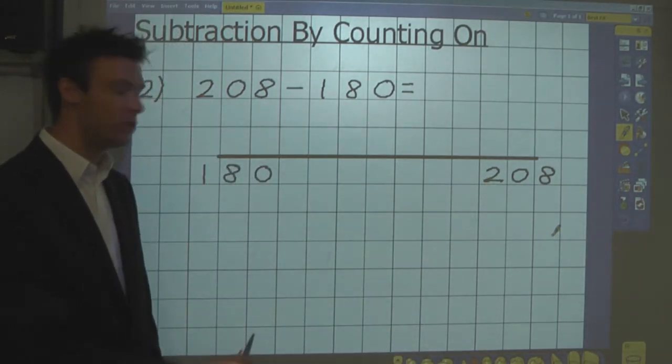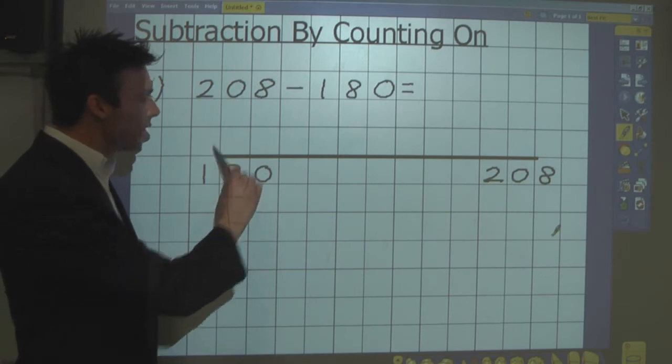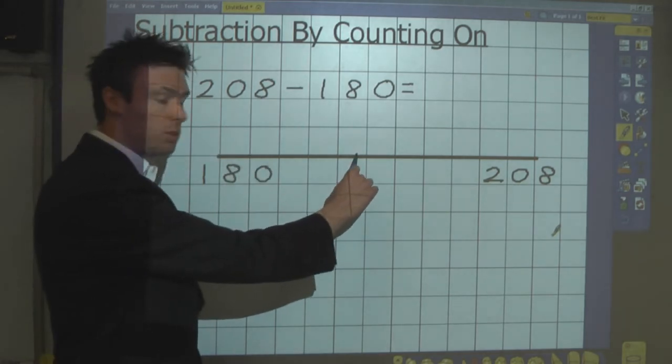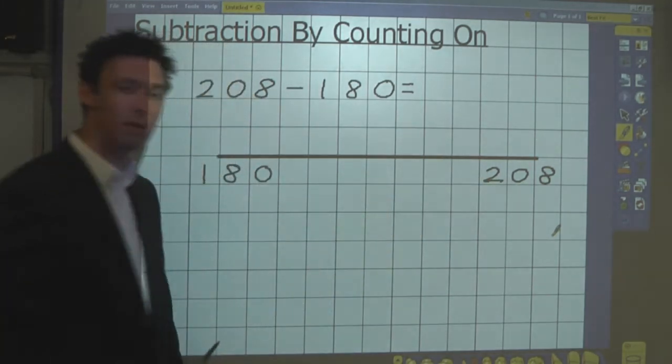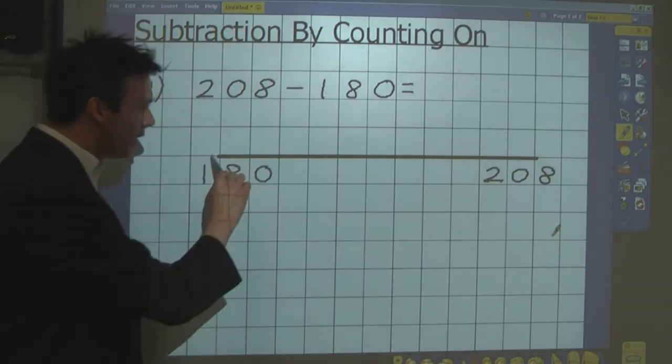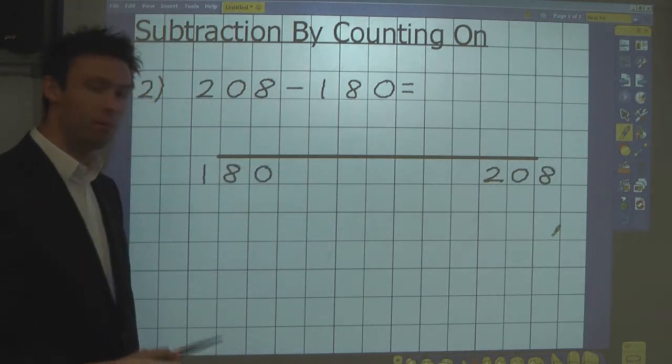So how do I do this when I'm counting on? I look for a number to count up to first which will make it easier then to get to my target number. And the number I should count up to next will be the number 200.